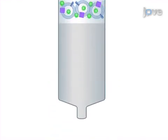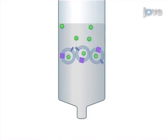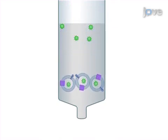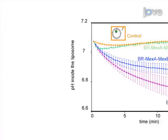The last step is the removal of non-encapsulated pyranine by running the proteoliposomes on a desalting column. Large proteoliposomes reach the bottom of the column much faster than non-encapsulated pyranine, which remains trapped at the top of the column.